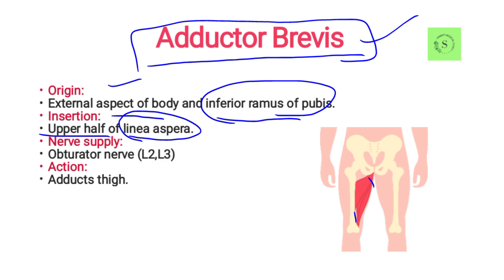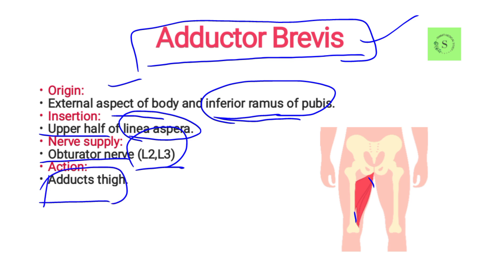The nerve supply of the adductor brevis is the obturator nerve, with a root value of L2 and L3. The function of adductor brevis is to adduct the thigh. It originates from the inferior ramus of the pubis, which remains fixed, and inserts into the upper half of the linea aspera, where movement takes place.